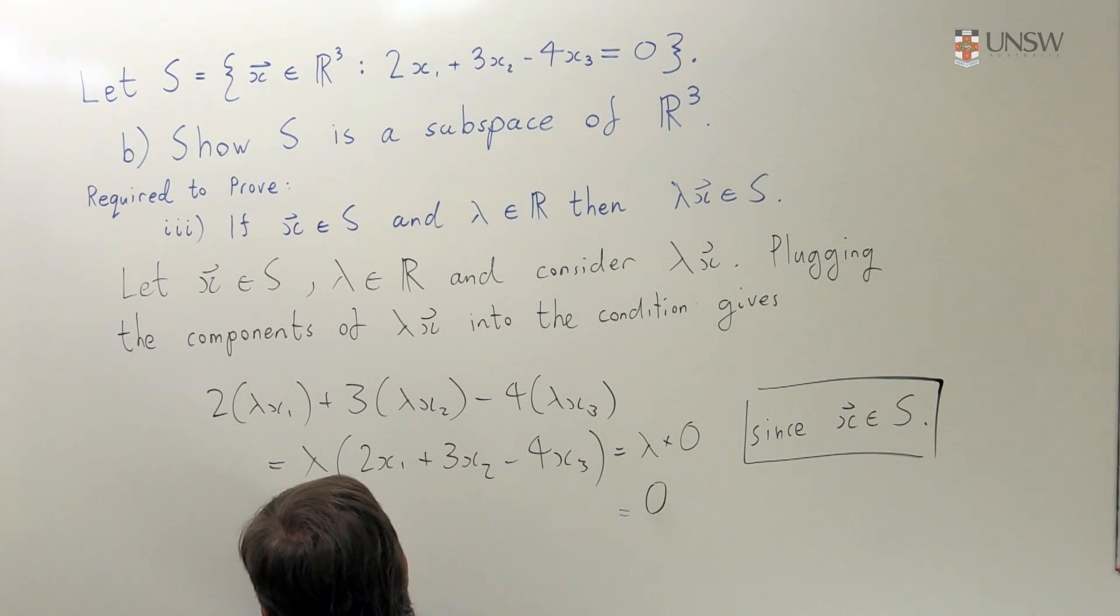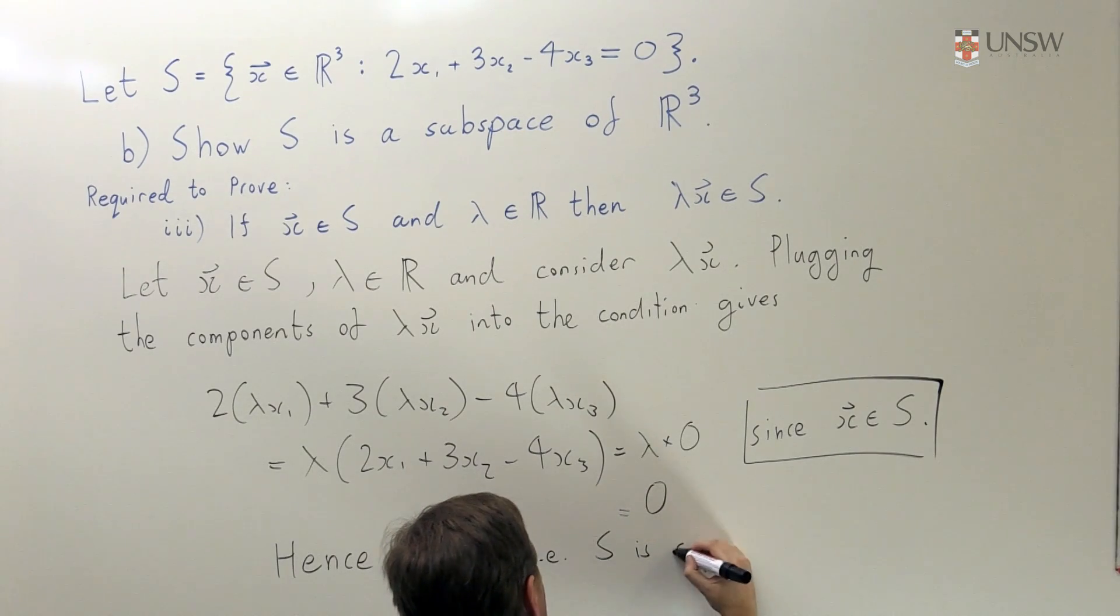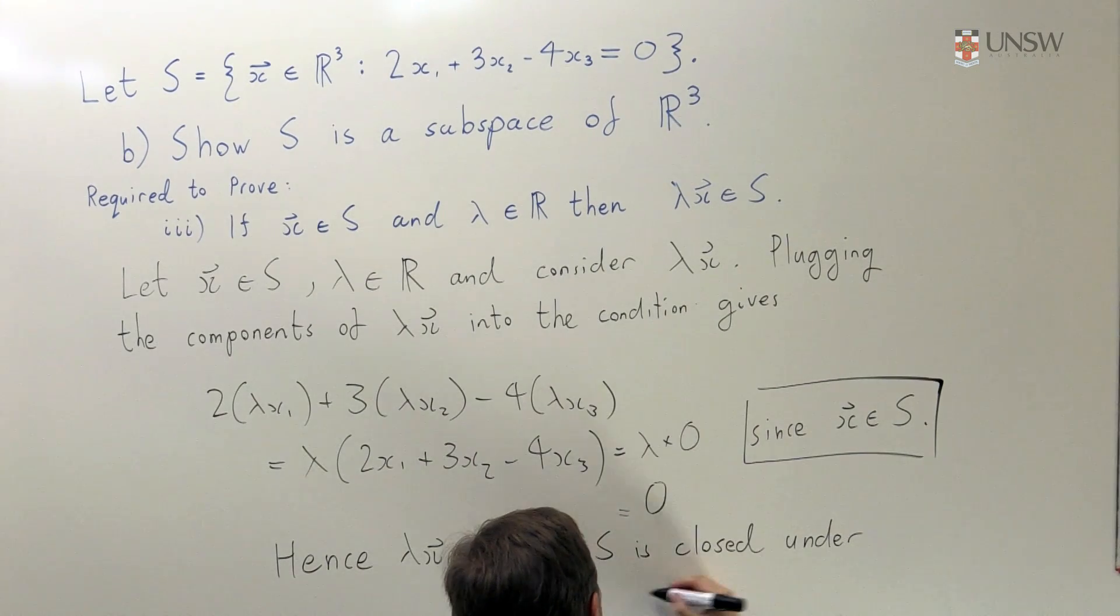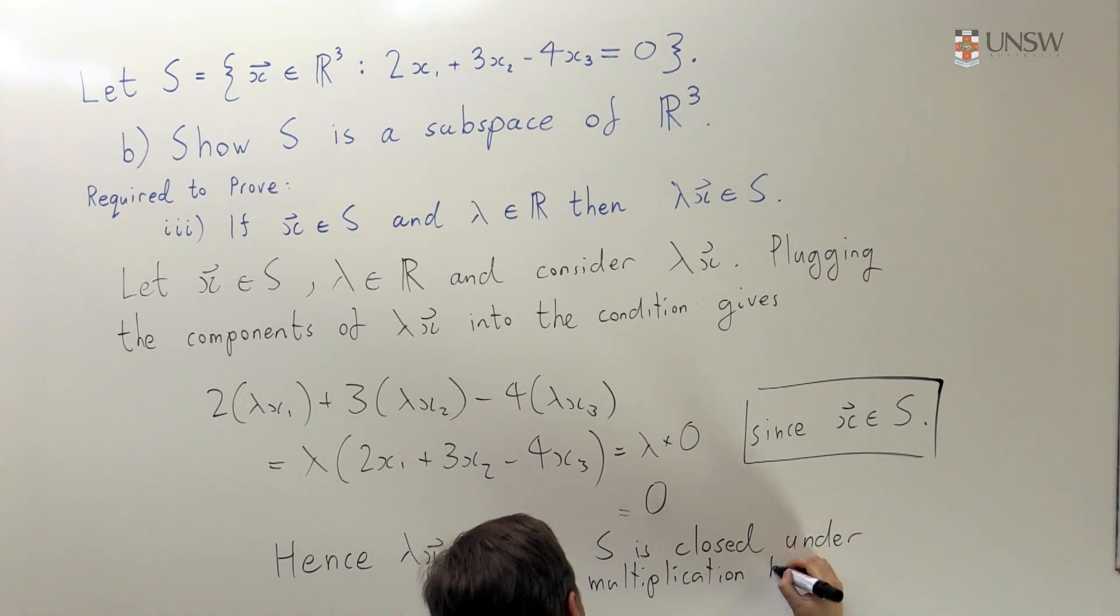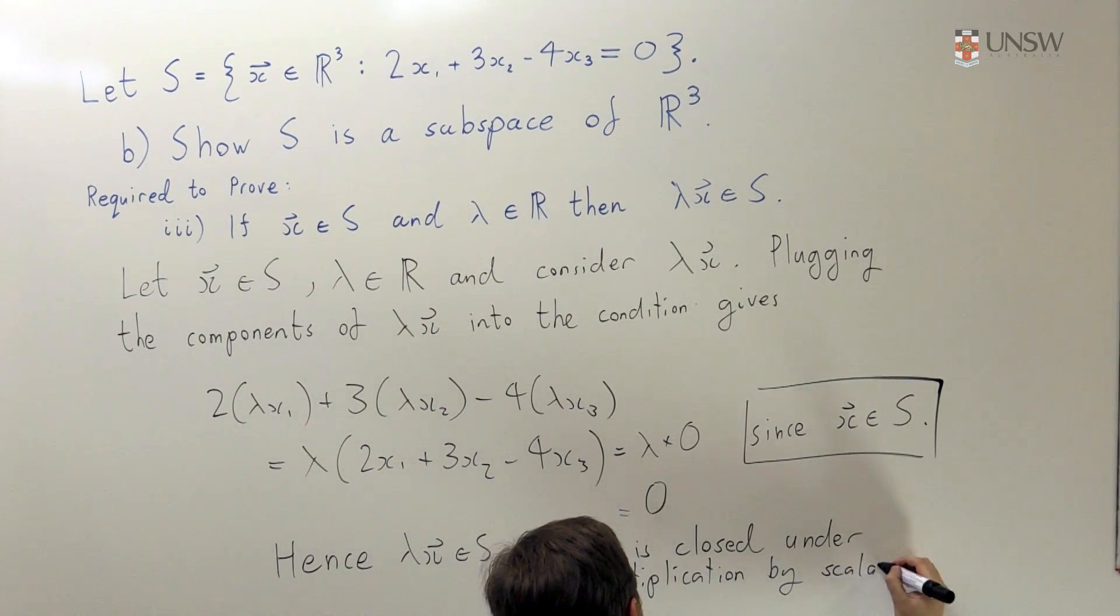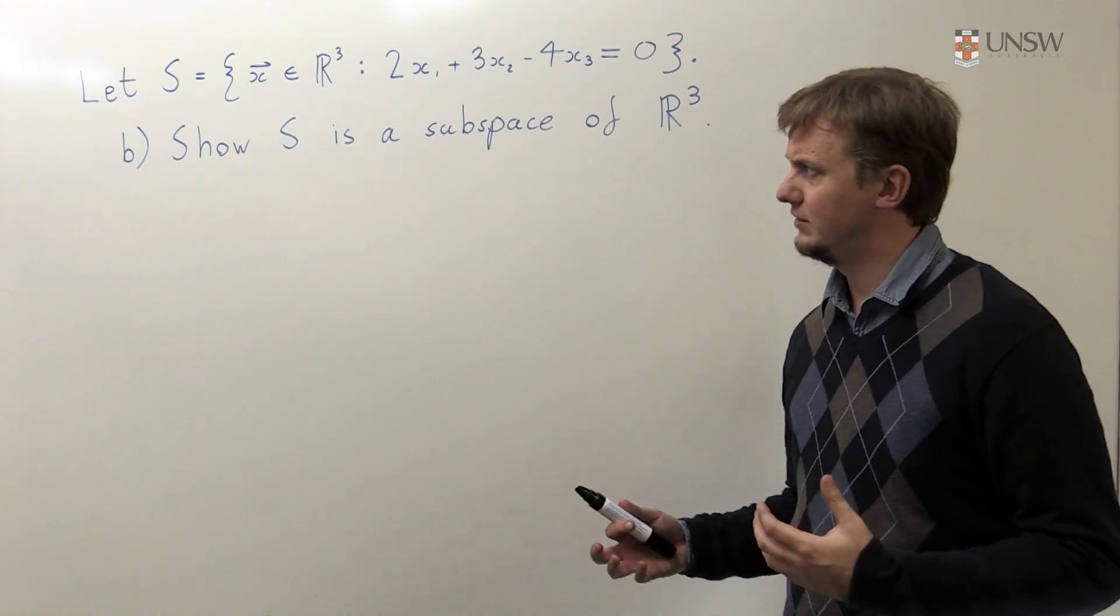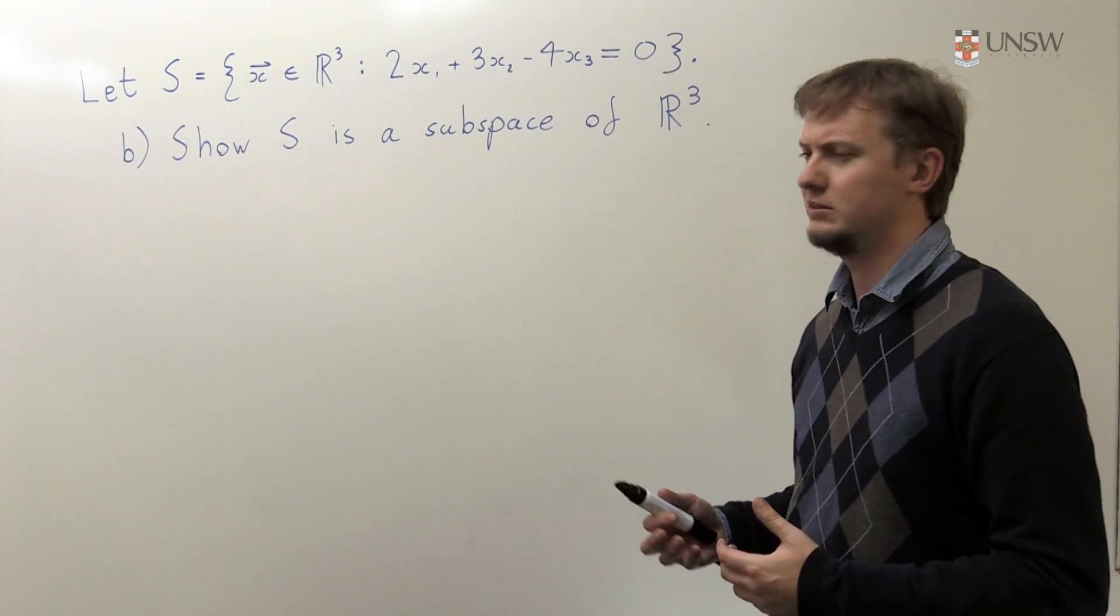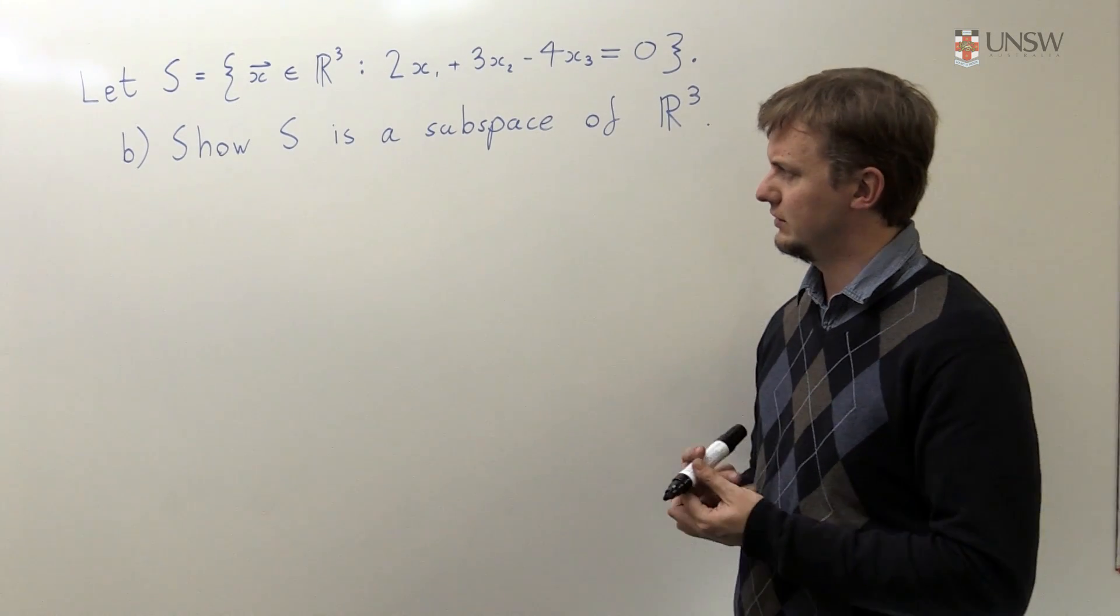Well, that shows me that the components of this vector satisfy this condition, so therefore this is in S. And there is a special name to that. So lambda X is in S. That means that S is closed under multiplication by scalars. Okay, we've shown that S contains the zero vector from R³, S is closed under vector addition, and S is closed under multiplication by scalars.